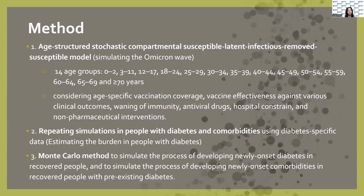We utilized an age-structured stochastic compartmental model to simulate the Omicron wave across 14 age groups. The SLIR model is a classic epidemiological and mathematical model used to simulate the spread of infectious disease in a population.